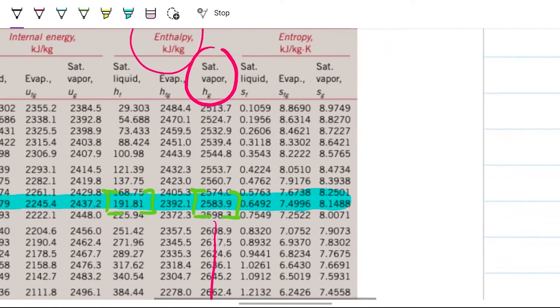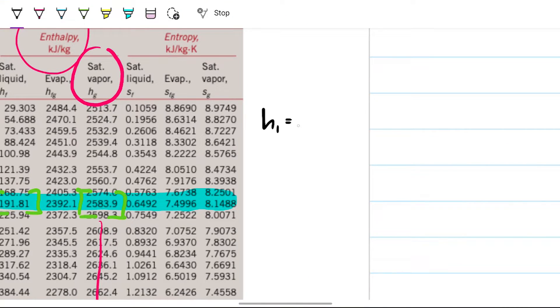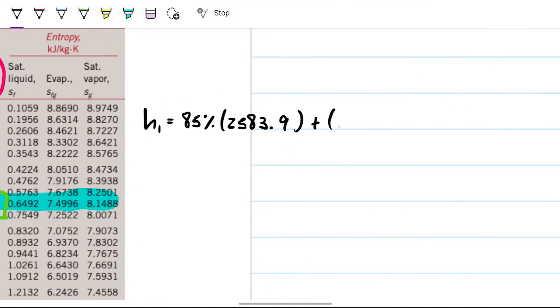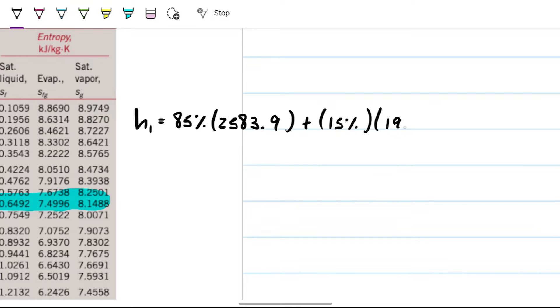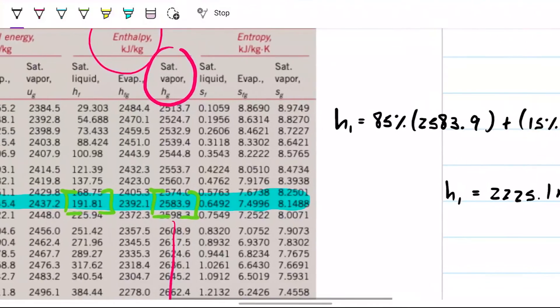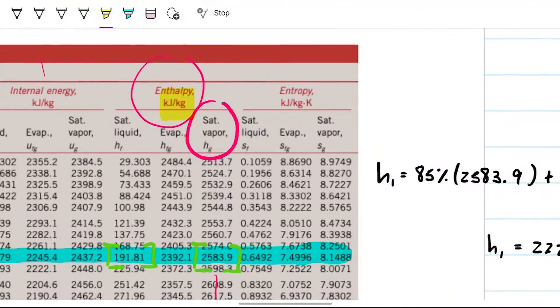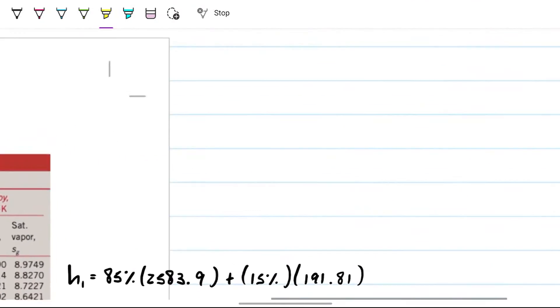So h3 will be 85% of 2583.9 plus whatever is left, 100 minus 85, which is 15% times the 191.81. So my h3 is 2225.1 and that is kilojoules per kilogram. Units, I'm always checking the units here. That's how I know the units. So now that I have this, I have everything I need to be able to solve the w2.